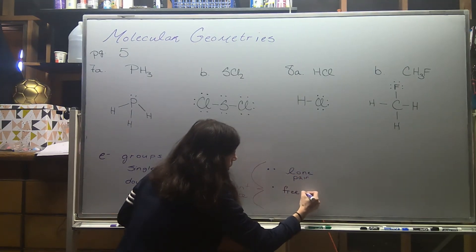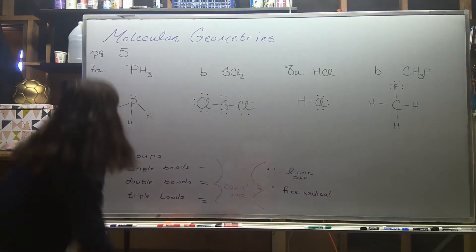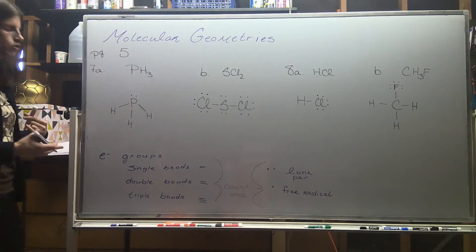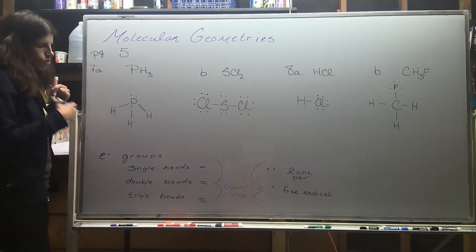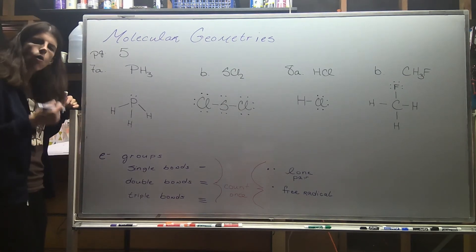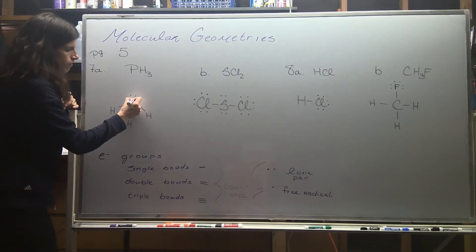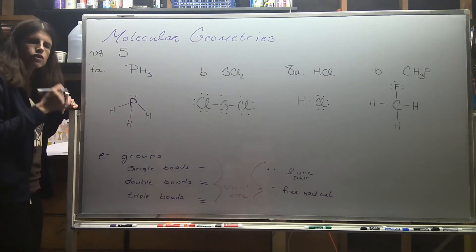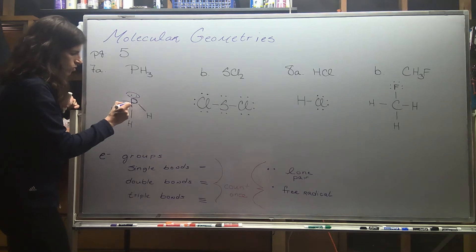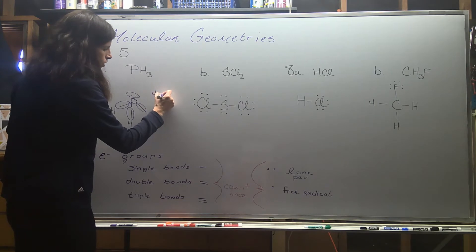Going back to one of the first structures we drew on page five — PH₃. The first thing when analyzing molecular geometries is to identify the total number of electron groups. Your analysis is always based upon the central atom, so here I'm focusing on phosphorus. Phosphorus has one, two, three, four electron groups — so four total.